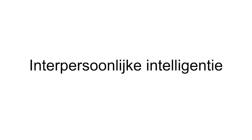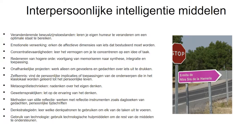Als laatste, hoe kun je aan intrapersoonlijke intelligentie werken? Jezelf kennen en ruimte hebben om na te denken is een van de basisgedachten van deze intelligentie. Daarvoor kun je middelen gebruiken zoals je eigen humeur leren veranderen om een optimale toestand te bereiken, herkennen wat je moet studeren, concentratievermogen ontwikkelen, ruimte hebben om alleen te werken, gevoelens en gedachten uiten, of toepassingen van lesonderwerpen koppelen aan het persoonlijke leven. Reflectie via dagboeken en persoonlijke reflectiemethoden horen hier ook bij.